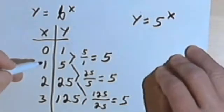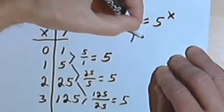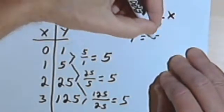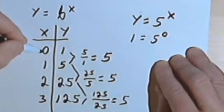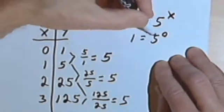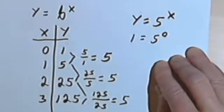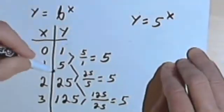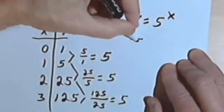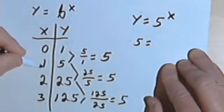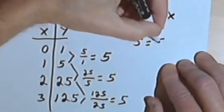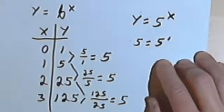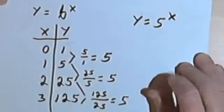And let's check that. So when y is 1, this table would say that it's the same as 5 to the 0 power. That's my input. Well, 5 to the 0 power, any number to the 0 power, is 1. So this works. When y is 5, what I'm going to have is 5 raised to the 1st power, and 5 to the 1st power is 5, so that works.